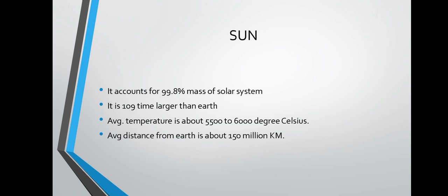The sun accounts for 99.8% of the mass of the solar system. It is 109 times larger than the Earth. Its average temperature is about 5500 to 6000 degrees Celsius, and its average distance from the Earth is about 150 million kilometers.